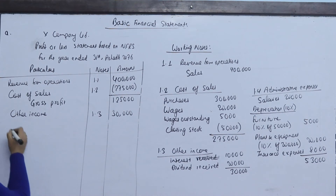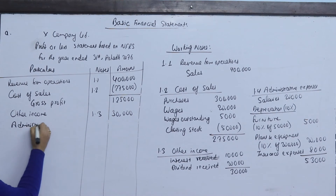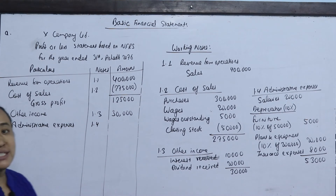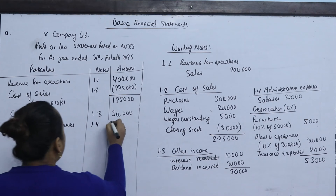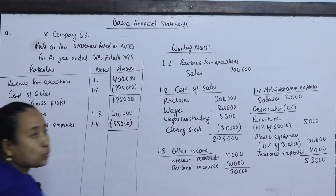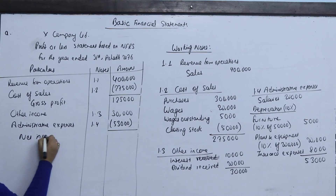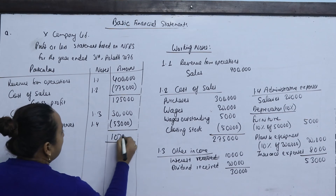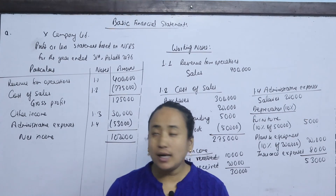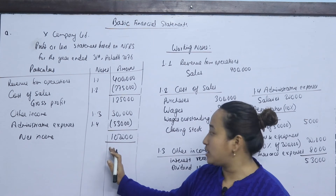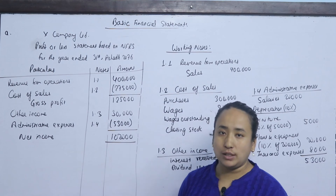You can write administrative expenses as 53,000. If you do not include tax and interest, the net income is calculated as gross profit 1,25,000 plus other income 30,000 less administrative expenses 53,000. This gives the net income. The working note table confirms net income of 1,02,000.